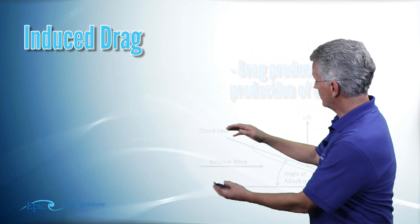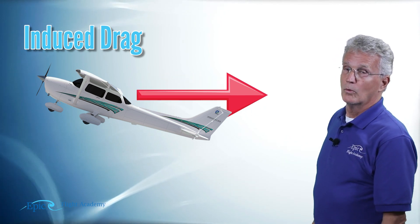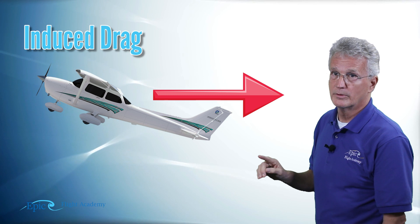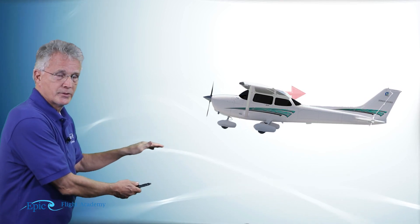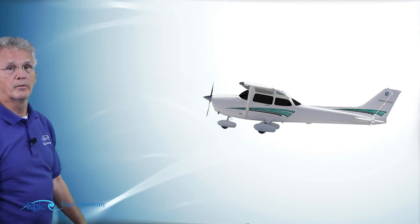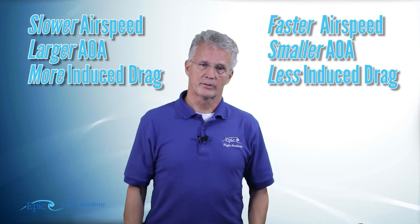Take a look at this airfoil — a large angle of attack produces large amounts of induced drag. Remember, we're flying at higher angles of attack at slower airspeeds in order to make the same amount of lift. Take a look at this airfoil with a smaller angle of attack — there's less induced drag, and we're flying at a higher airspeed and can produce the same amount of lift. So: slower airspeed, larger angle of attack, more induced drag. Faster airspeed, smaller angle of attack, less induced drag.